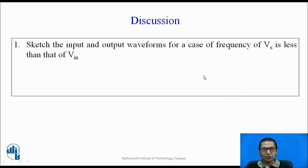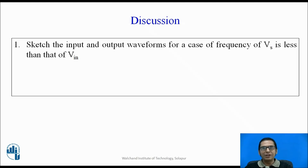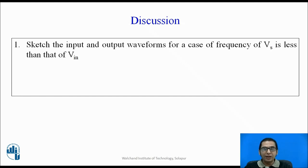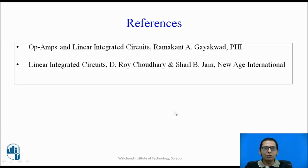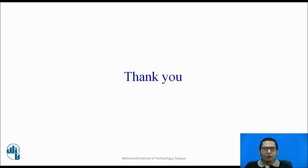With that we come to the end of this session on sample and hold. As a discussion exercise: can you sketch the input and output waveform when the frequency of Vs — the sampling frequency — is less than that of Vin? What will be the effect on the output? References used are two books: one by Ramakant Gaikwad and the second by Roy Choudhury and Jain. Thank you, students, for your patient listening.